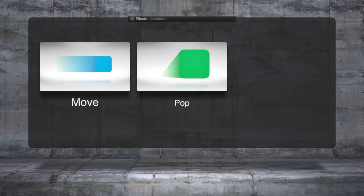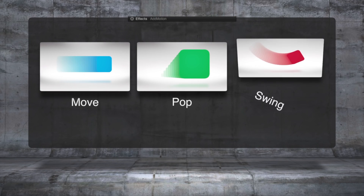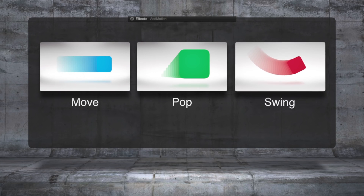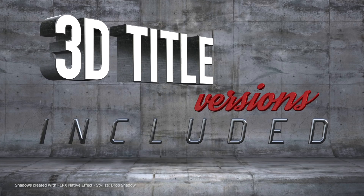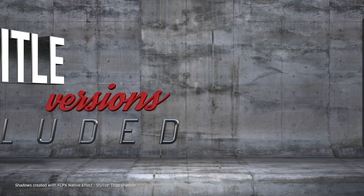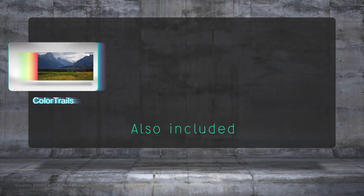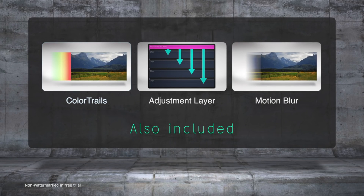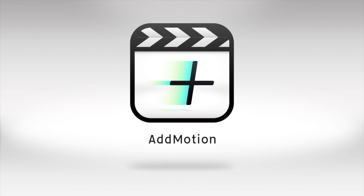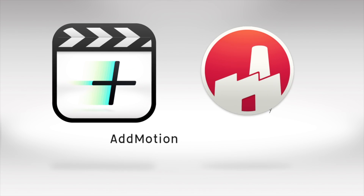There are some presets: move, pop, swing, along with three basic motions. It also allows you to give objects either a motion blur or a color trail. There's also an adjustment layer that allows you to apply a single effect to multiple objects, making the task of animating even faster.